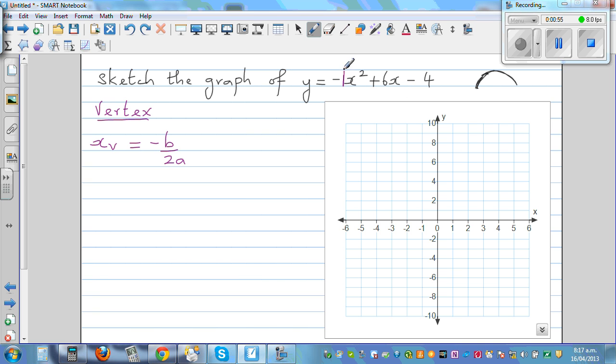And c is the coefficient, also c is the constant which is negative 4. So we are dealing with only b and a. So negative b would be negative 6 over 2 times negative 1, which is negative 6 divided by negative 2, which is 3.